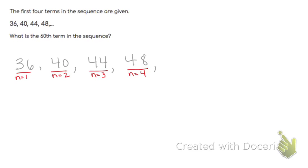What if we wanted to find the fifth term? The sixth term? And the seventh term? How do we do that?